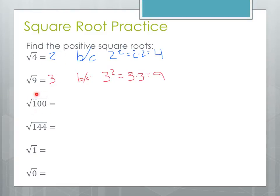Let's move on to our next example, the square root of 100. What number times itself will give me 100? That's going to be 10 because 10 squared or 10 times 10 equals 100.